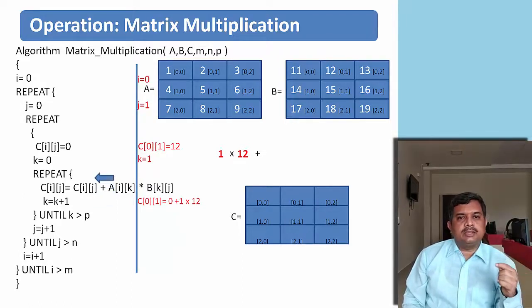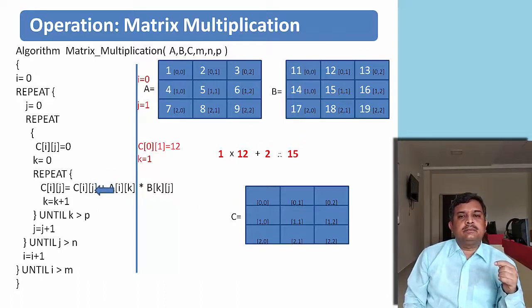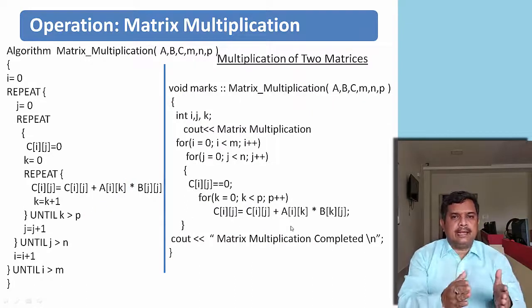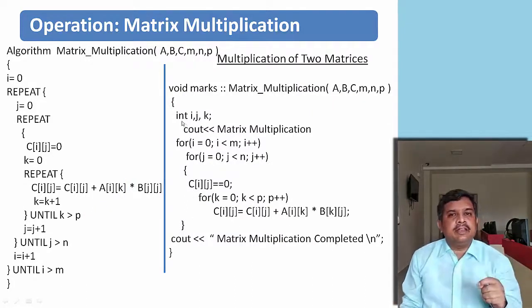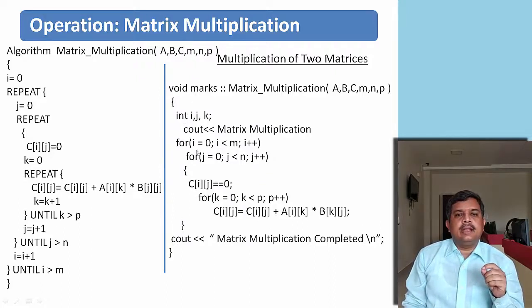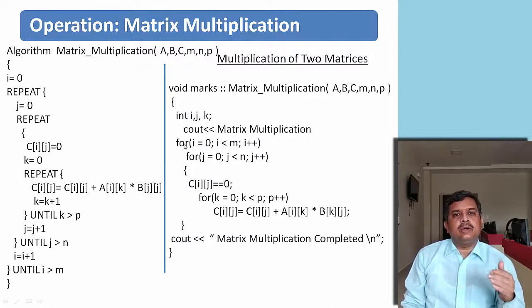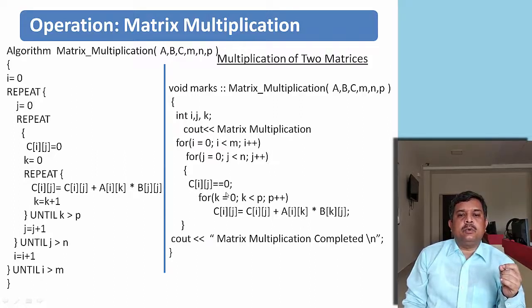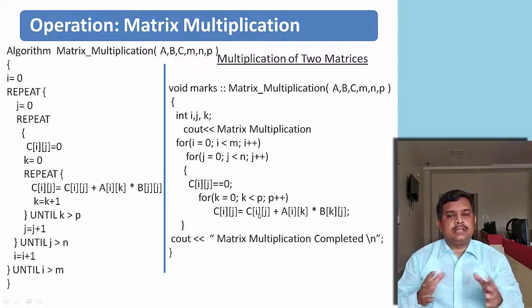We have exactly translated the algorithm to the program. We are taking three variables: I, J, and K. We are writing an output statement. Then two loops: for I equal to 0, I less than row size, I++; and J equal to 0, J less than column size, J++. We are taking c[i][j] value to be 0. And taking one more loop for K going from 0 to P. With this particular statement we are going to compute the matrix multiplication.